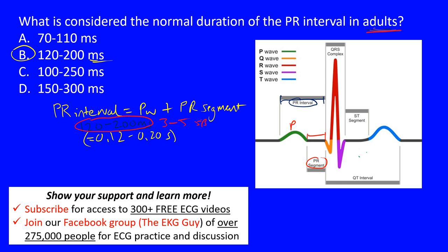That normal range corresponds to between three and five small boxes on EKG paper. Each small box on EKG paper represents 40 milliseconds. So three small boxes equals 120 milliseconds, and adding two more boxes — 80 additional milliseconds — gets you up to 200 milliseconds. Normal is when the PR interval falls between three and five small boxes.